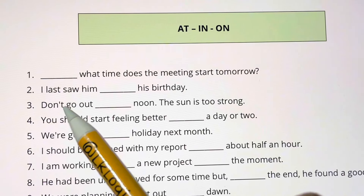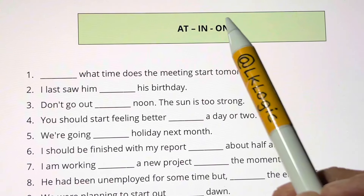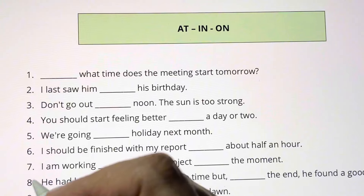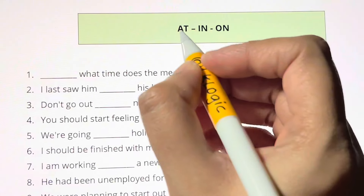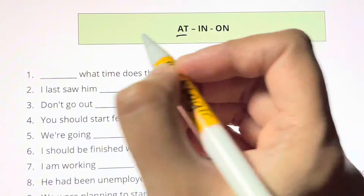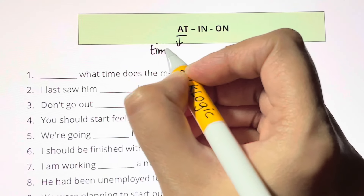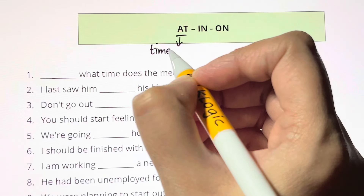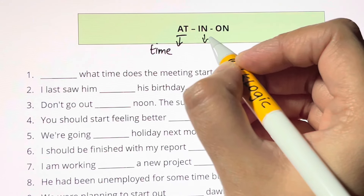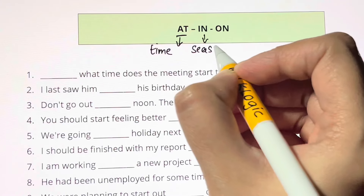Hi guys, here we have a beautiful exercise on prepositions: at, in, on. You have to fill in the blanks with at, in, or on. First of all, you should know where we can use each one. AT comes before clock times — for example, 6 p.m., 6 o'clock, 5 o'clock. IN comes before seasons, months, and years. And ON comes before days or dates.